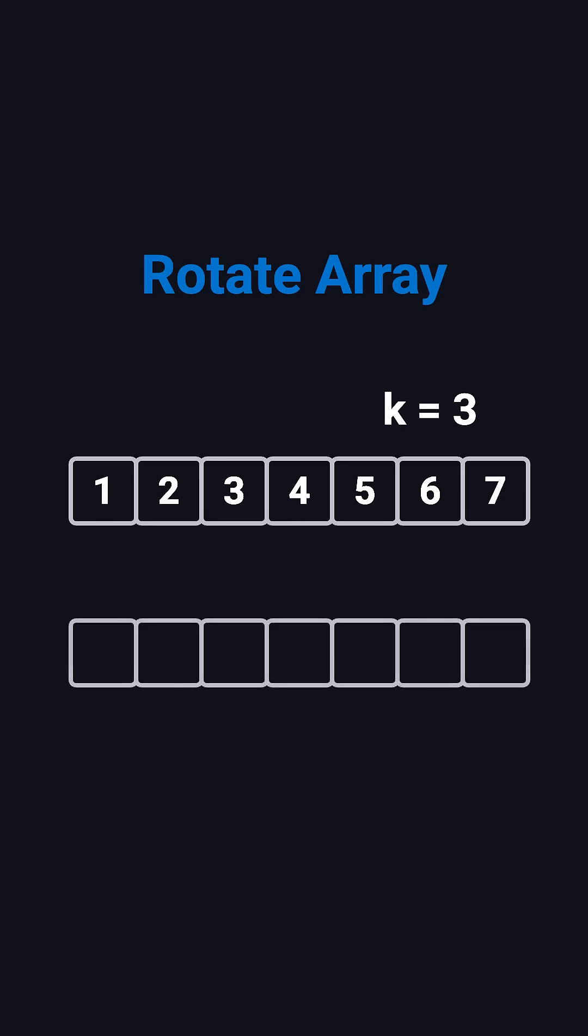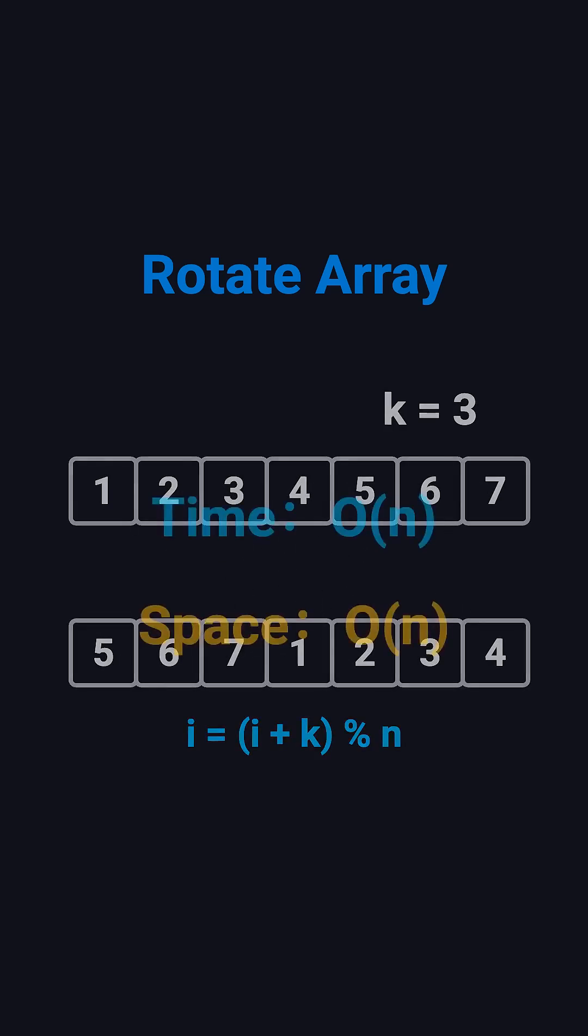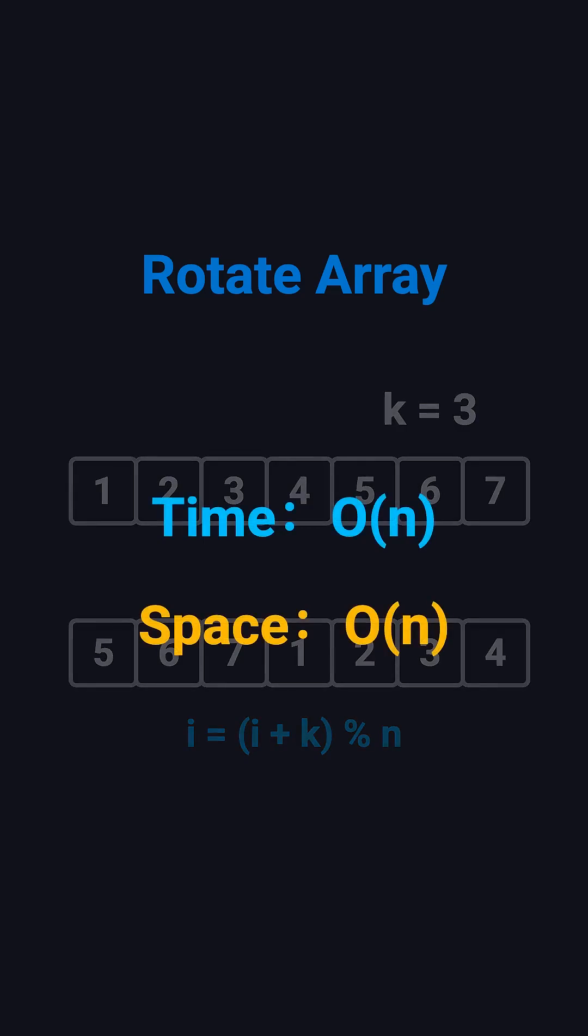The simplest approach is to create a new array. For each element at index i, place it at i plus k mod n. This runs in O(n) time, but also uses O(n) extra space.